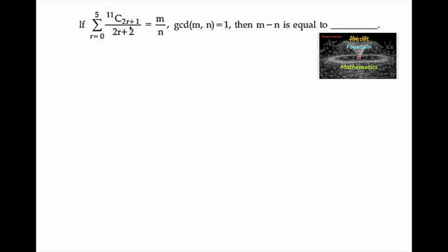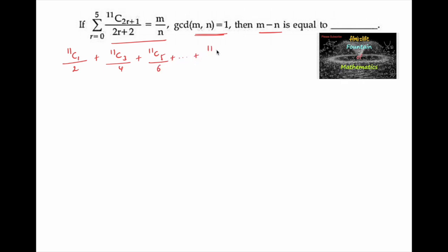The sum from r=0 to 5 of C(11, 2r+1) divided by (2r+2) equals m over n, where gcd(m,n)=1, and we need to find m minus n. Expanding: when r=0 we get 11C1 over 2; when r=1 we get 11C3 over 4; when r=2 we get 11C5 over 6; and so on up to when r=5 we get 11C11 over 12.